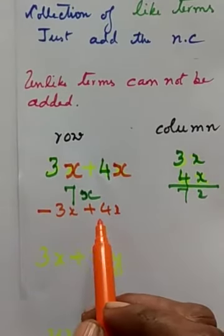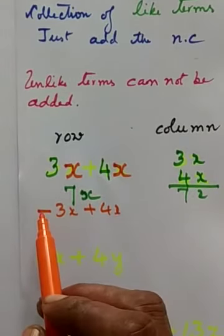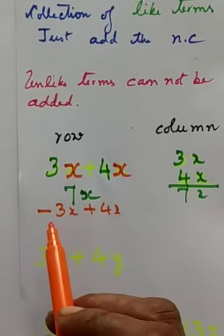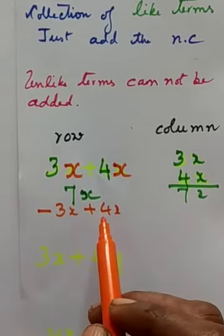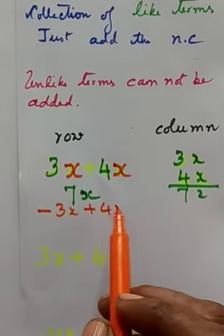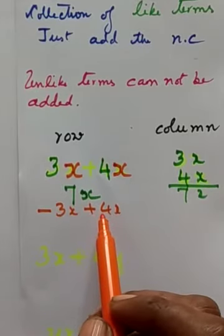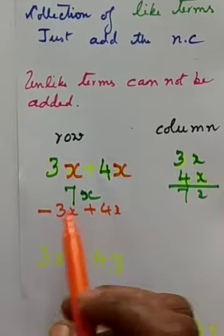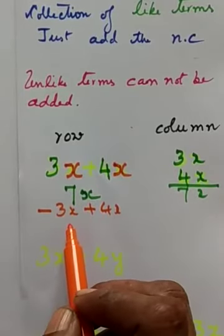Here the signs are unlike. Minus and plus. So what will you do? Subtract the smaller number from bigger number. Bigger number 4 minus 3, that is 1.